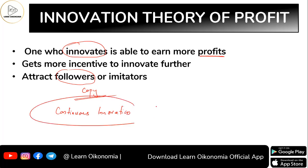Inventions and innovation act as an incentive for the innovator to get profit. But when a person innovates something, it won't remain exclusively his forever — the same technique, inputs, or market would get copied by others. So what this person has to do is engage in continuous innovation. When he finds that his initial innovation is being followed by others, he can go for a new innovation, which gives him more profit again. Then that too gets copied, so he must innovate again, and so on.